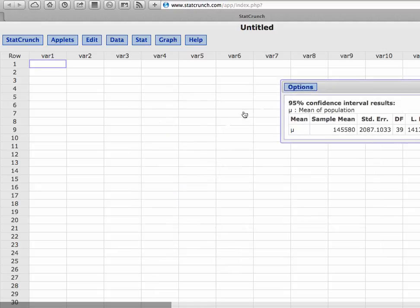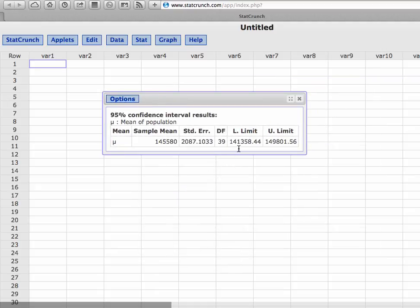We are not doing a hypothesis test. We're looking at a confidence interval with a 95% confidence level. Hit Compute, and we're going to get our interval. 141,358.44 and 149,801.56. We're going to have a little bit of difference here. Notice their standard error, excuse me, that's not the margin of error.